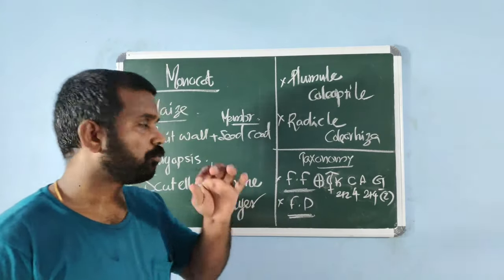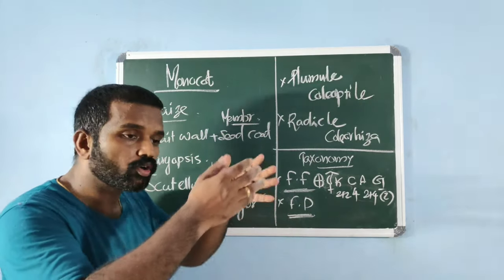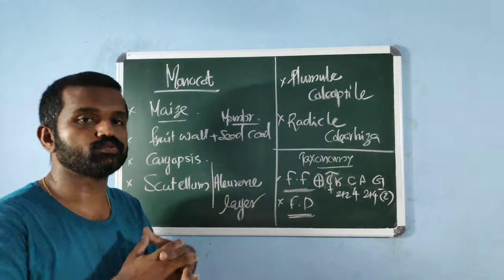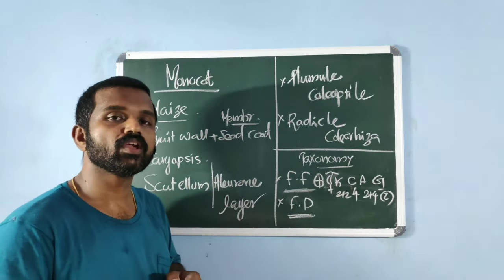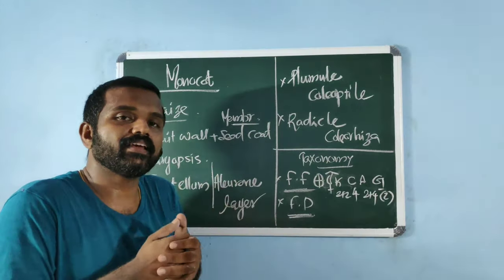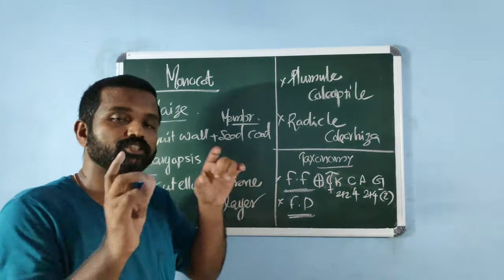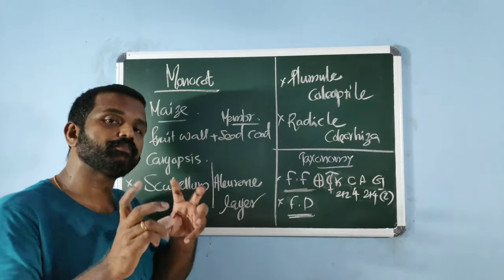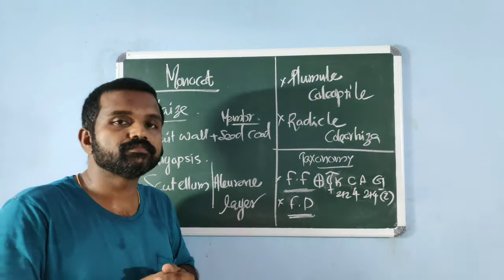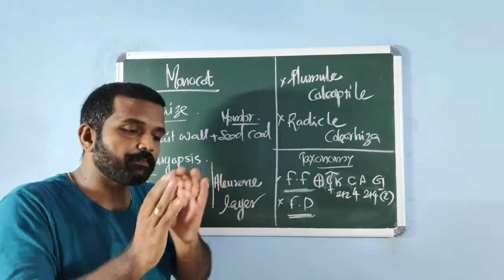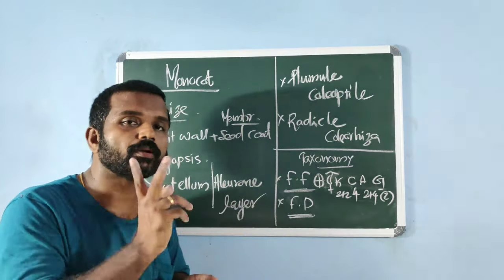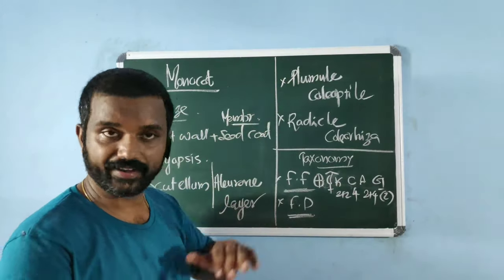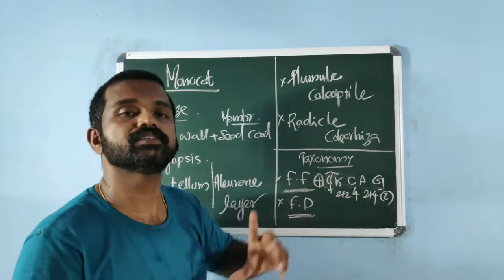Monocot seeds have a single cotyledon. Monocot seed structure is explained using maize as an example. In maize, the fruit wall and seed coat are fused; the seed coat is membranous. The maize grain is botanically considered a fruit — specifically a caryopsis. The single cotyledon of monocots is known as the scutellum. The aleurone layer is a layer of endosperm that separates the endosperm from the embryo — the aleurone layer is triploid. The embryonal axis has a plumule covered by the coleoptile and a radicle covered by the coleorhiza.